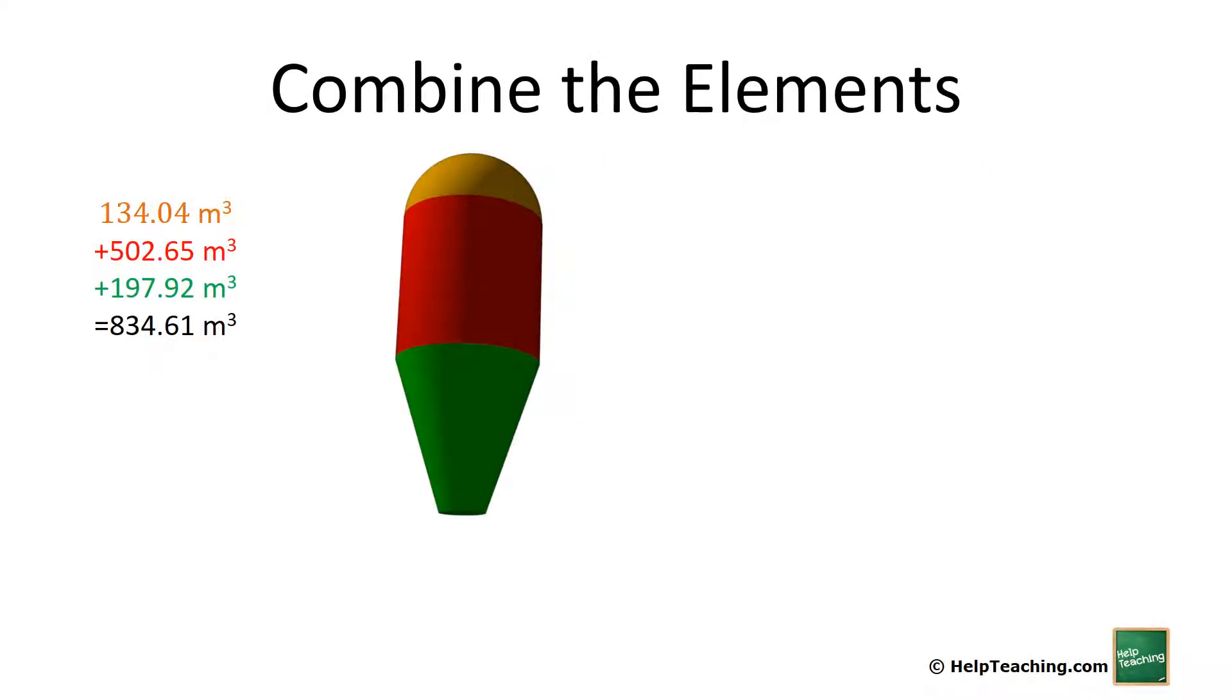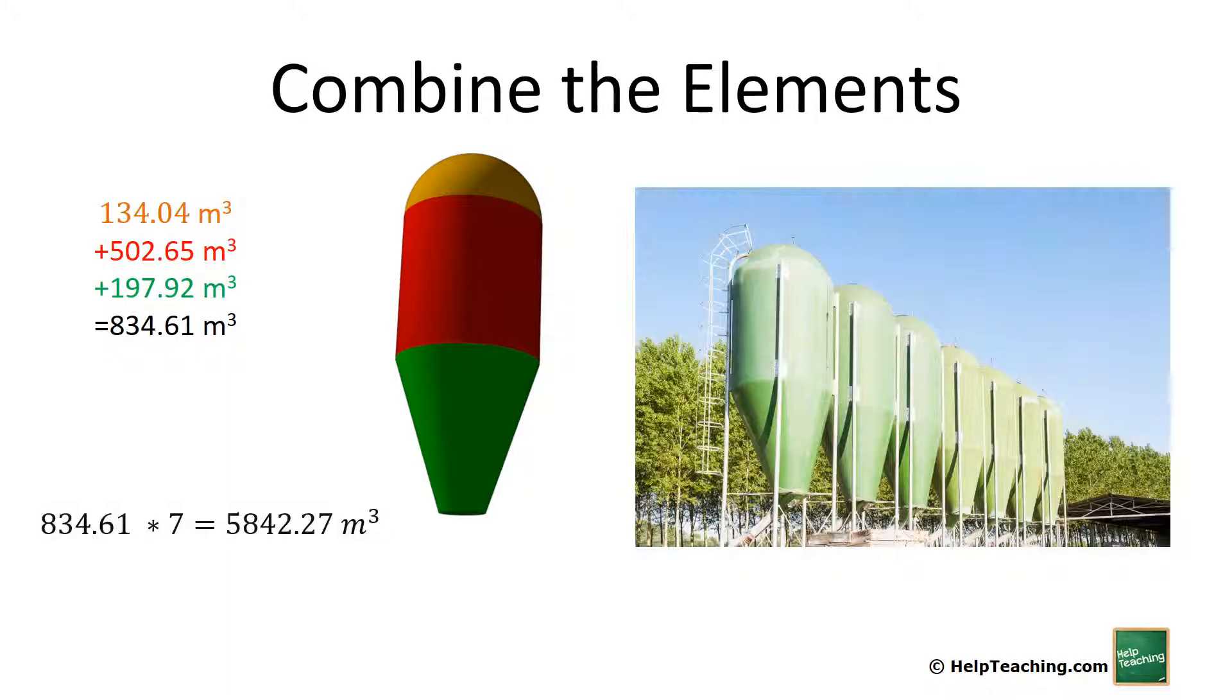We must remember that in the original picture it said how much can the complete row of silos hold, and there are seven of them. So we multiply by 7, and it asked us to give the answer to the nearest cubic meter, so we round to 5,842 cubic meters.